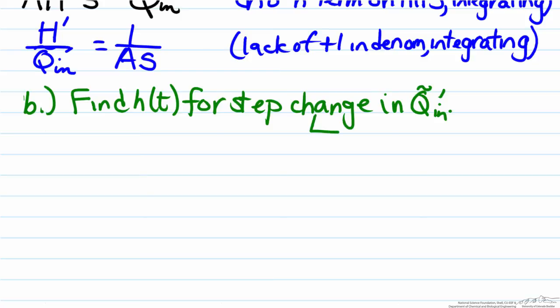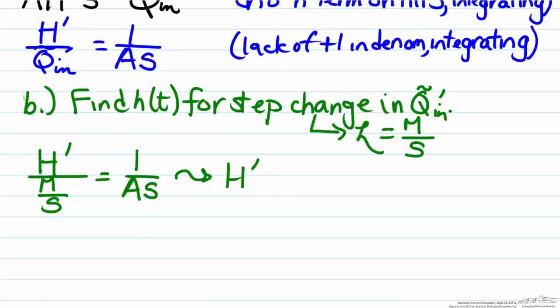So recall the fact that a step change in the Laplace domain is equal to M/s, where M is the magnitude of the step. So when we look at this we can substitute that into our function, so when we see Q_in we will replace that with M/s, and that will equal 1/(As).